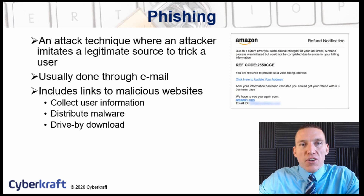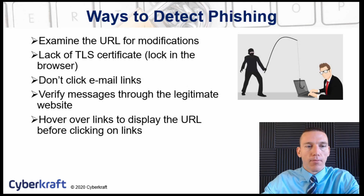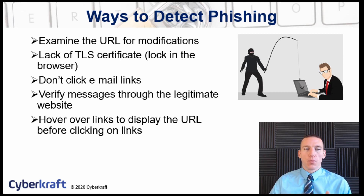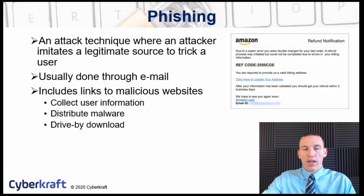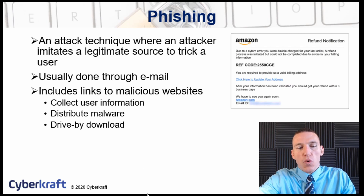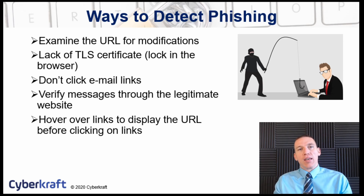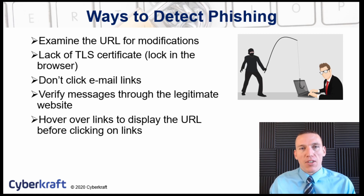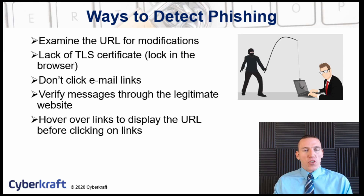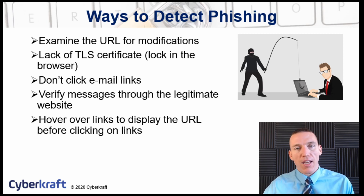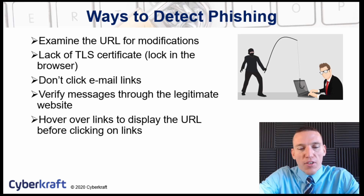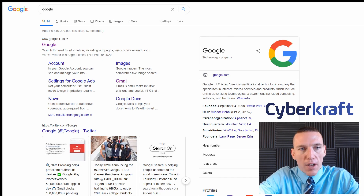How can you detect a phishing email? First, examine the URL by hovering over a link — you'll see a URL pop up at the bottom of your browser if you're using a web-based email platform. Examine that URL to see if it's been modified. Does it say amazon.com, or something spelled similarly but not quite right, like 'ama.zon.com'? It could also be a completely different URL. If you click the link, look in your browser bar for a transport layer security certificate.